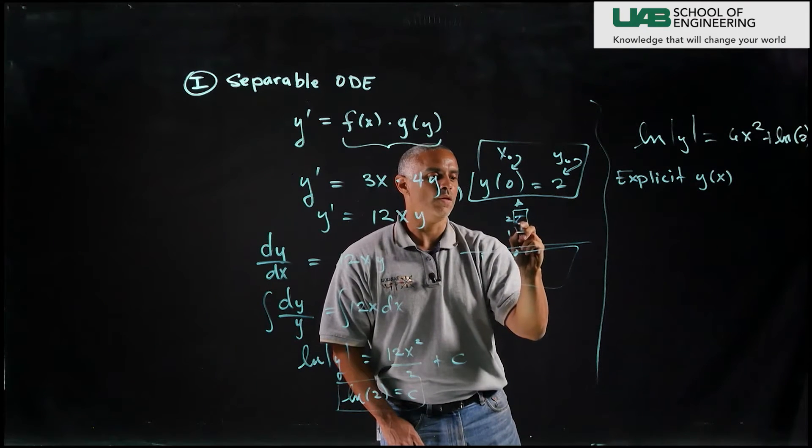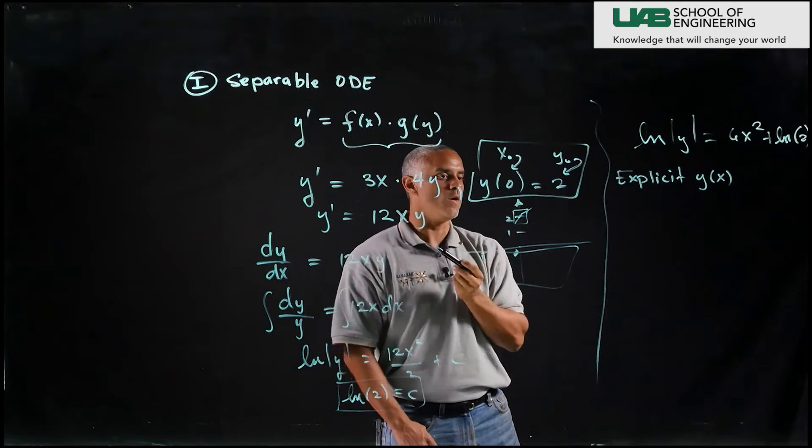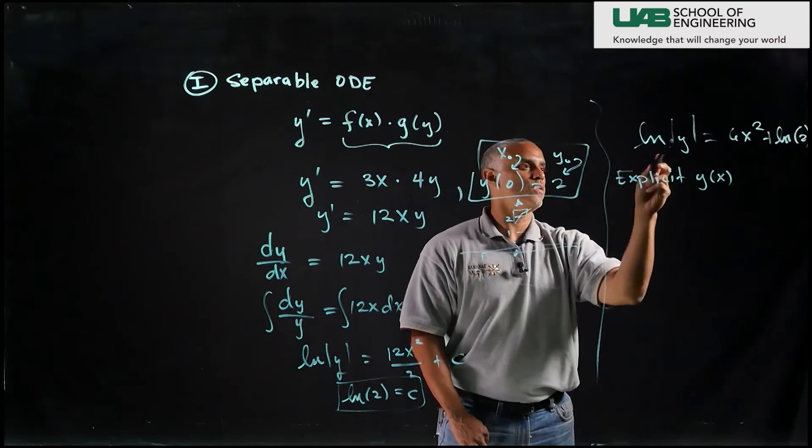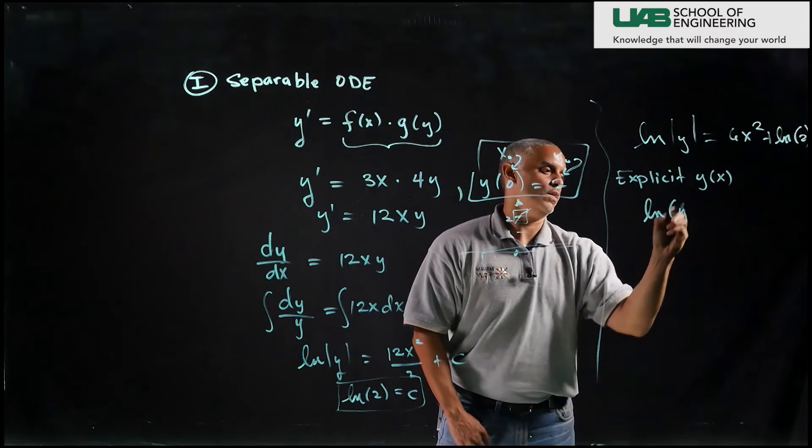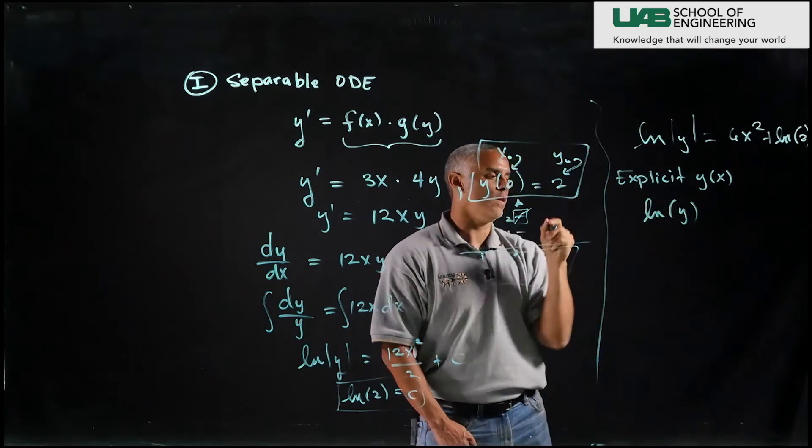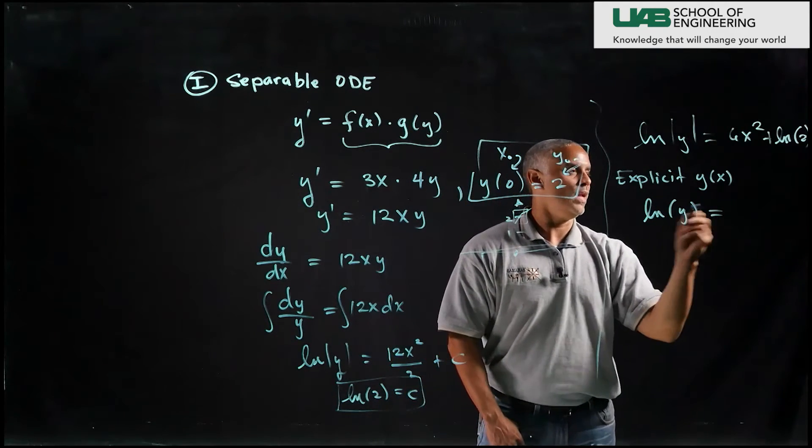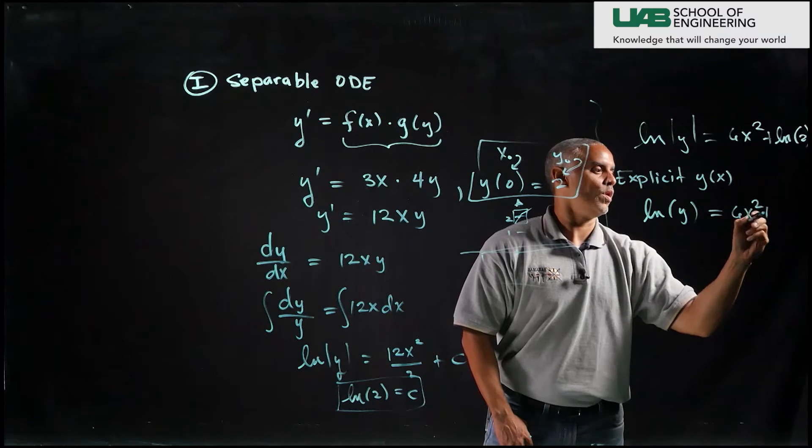An existence of uniqueness guarantees that if I have a solution it must be unique. So what do I do? Well I keep only the positive value ln y. Remember I cannot feed a negative value into the natural log. And so I get ln of y is 6x squared plus ln 2.